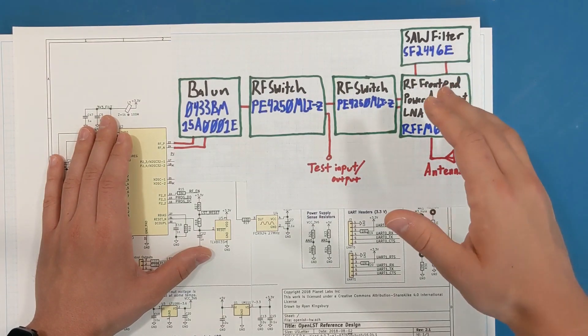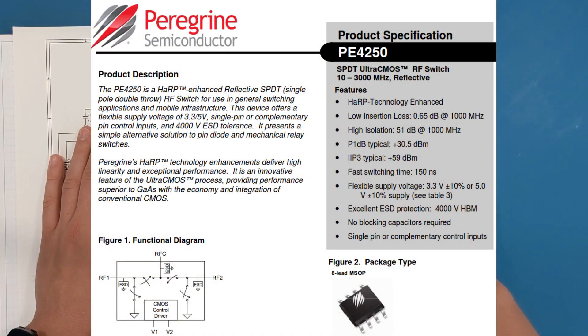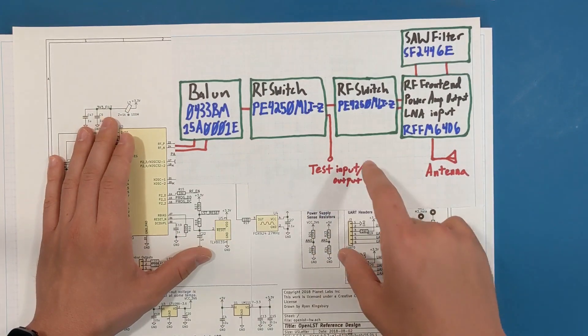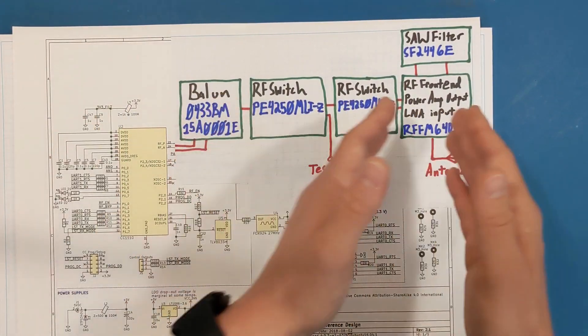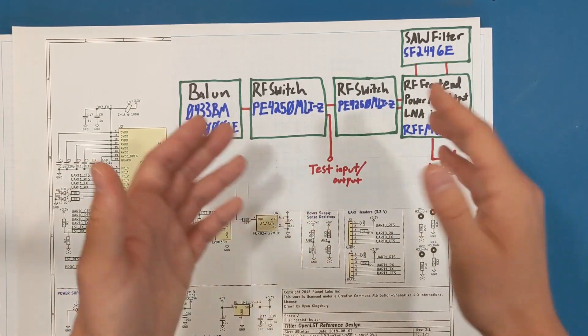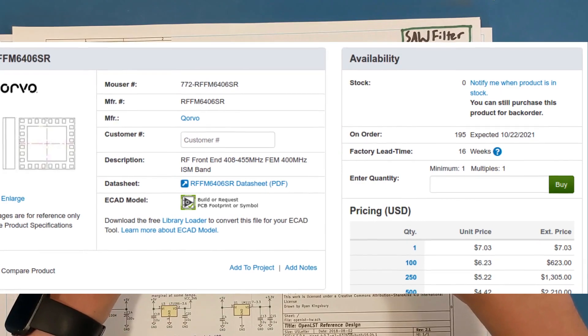This RF switch is in the same family as the one that was already on the design, and the reason that I have two of these is because I want to have a test input and output that I can hook up to without having to go through the RF front end. Even though the RF front end has some pass-through modes, it's on extreme backorder.